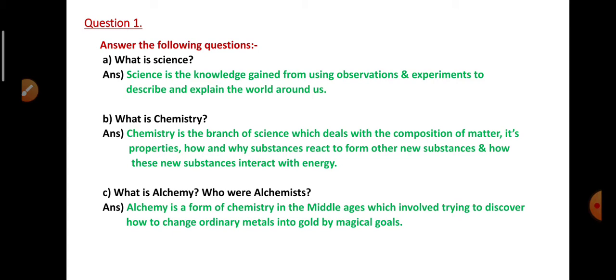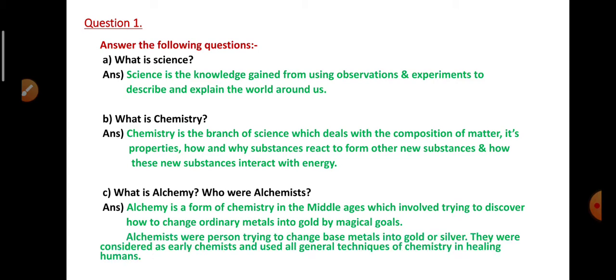Alchemists were the persons trying to change base metals into gold or silver. They were considered as earlier chemists and used general techniques of chemistry in healing humans.